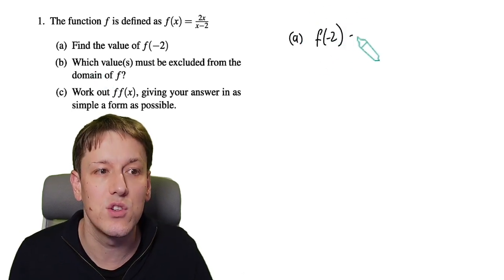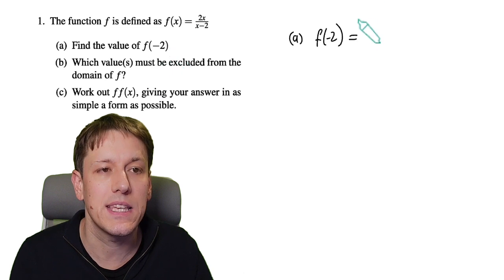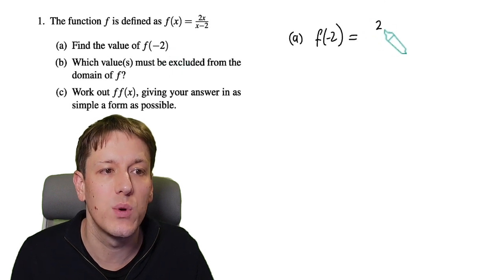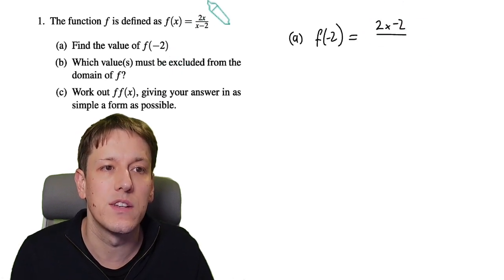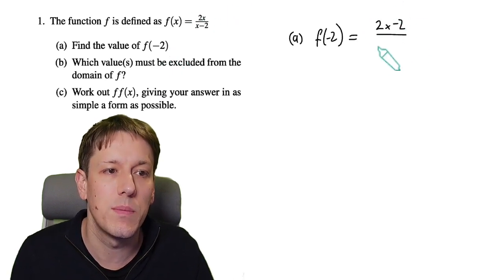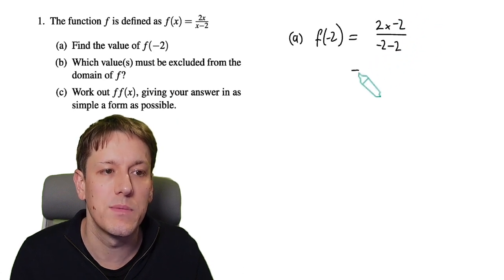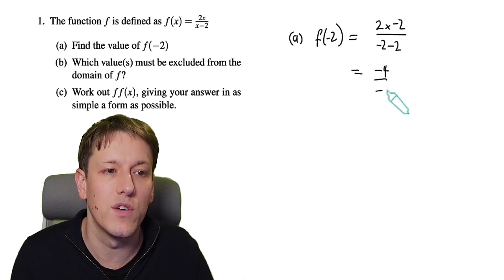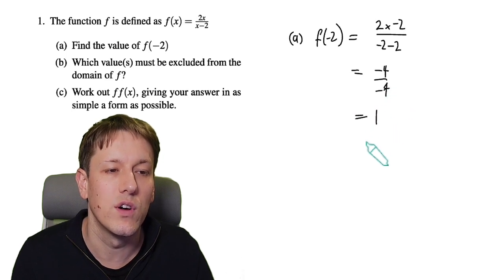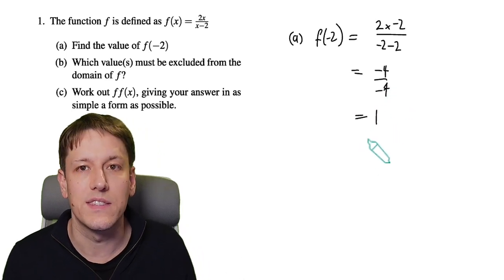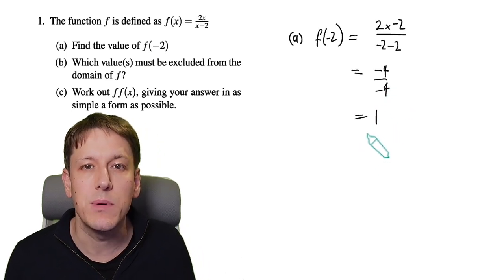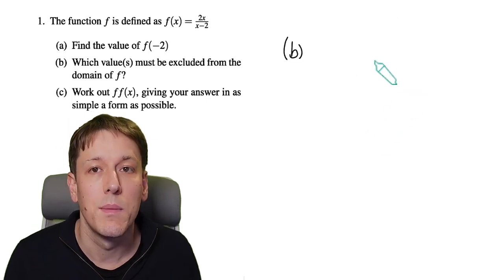To do f(-2) we just replace x with -2 everywhere we see it. So we've got 2 times -2 on the top, and then -2 minus 2 on the bottom. That's -4 over -4, which gives us the answer of 1. That's the output when we input -2 into that function.